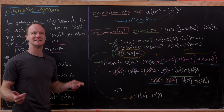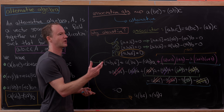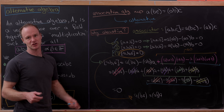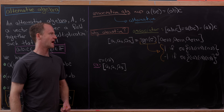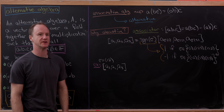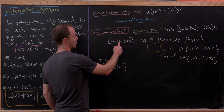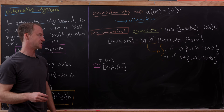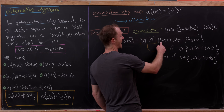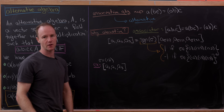So why is it called 'alternative'? Because the associator is an alternating multilinear form. You might know an alternative definition of 'alternating' involving permuting entries. It turns out these are the same. For a three-entry multilinear form, the associator of a1, a2, a3 equals the sign of sigma times the associator of a_σ(1), a_σ(2), a_σ(3), where sigma is a permutation in S3. The sign of sigma is 1 for even permutations and negative 1 for odd permutations.